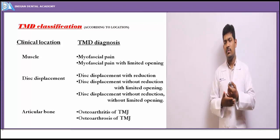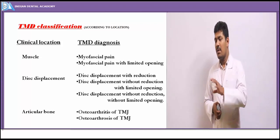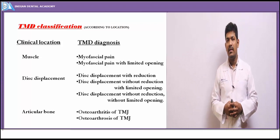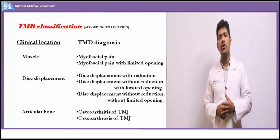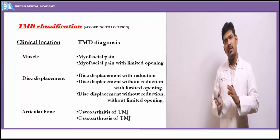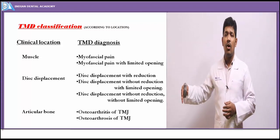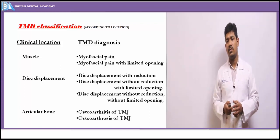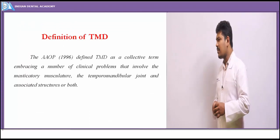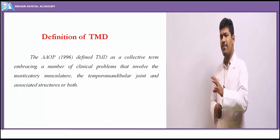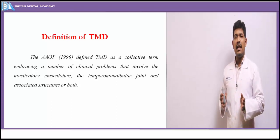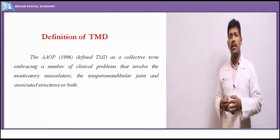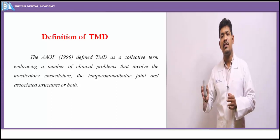The TMJ complex is basically made of bone tissue, muscle tissue, and the disc which is a soft tissue. Disorders of the muscles include myofascial pain and myofascial pain with limited opening. Disc disorders include three types of disc displacement: with reduction, without reduction with limited opening, and without reduction without limited opening. Bone disorders include osteoarthritis and osteoarthrosis of the TMJ. The American Association of Orofacial Pain defines TMD as a collective term encompassing clinical problems affecting the masticatory musculature, the temporomandibular joint, or both.